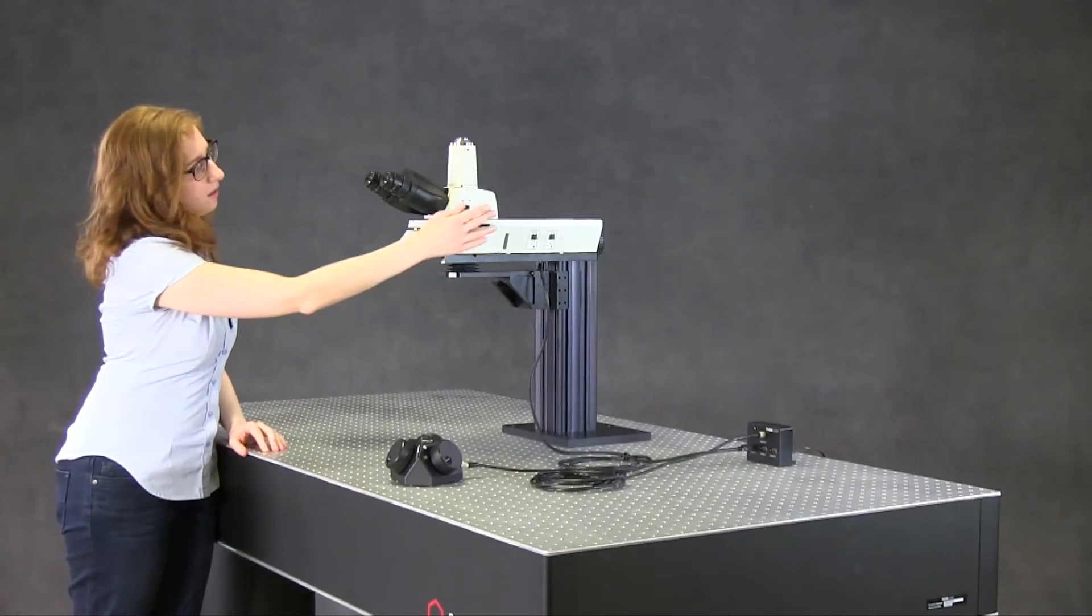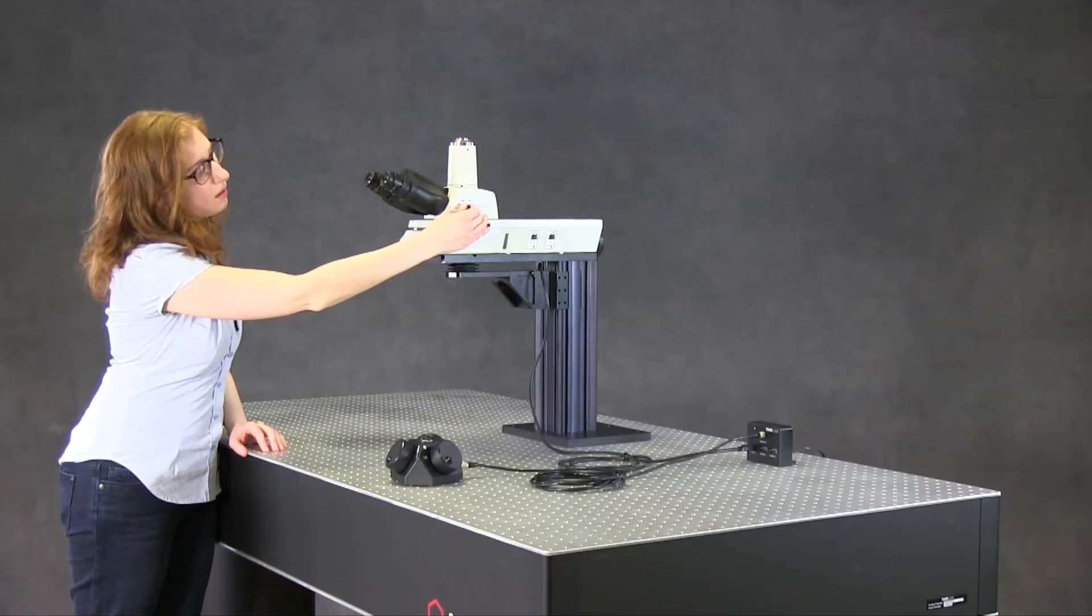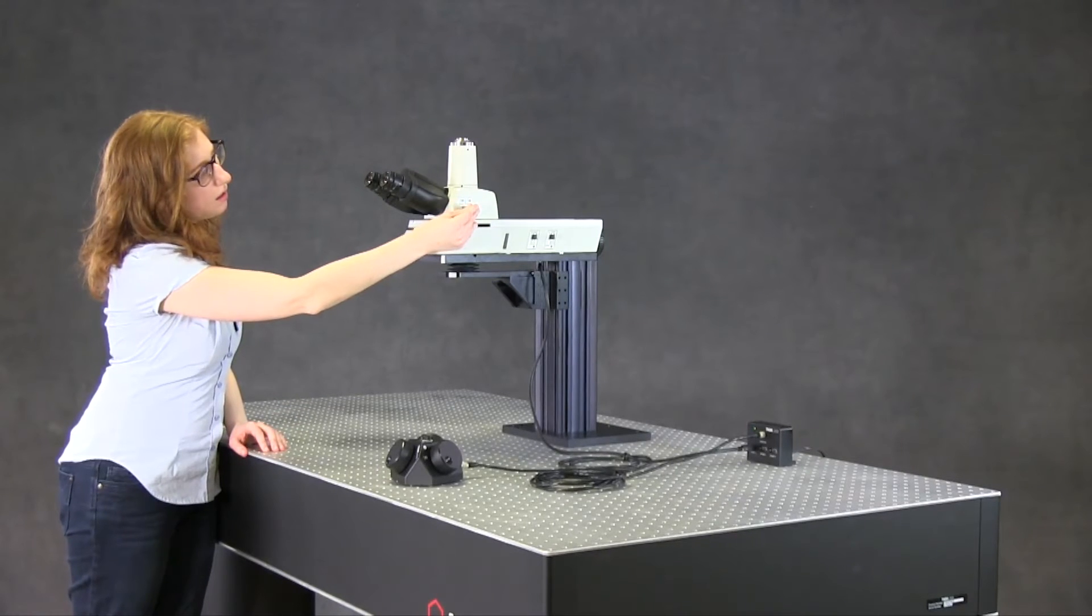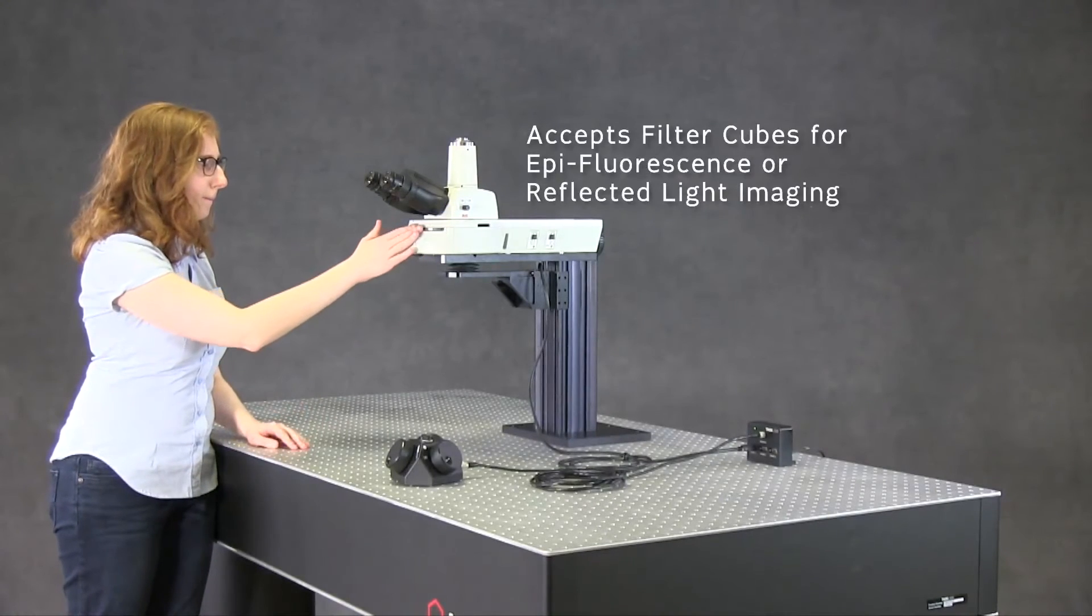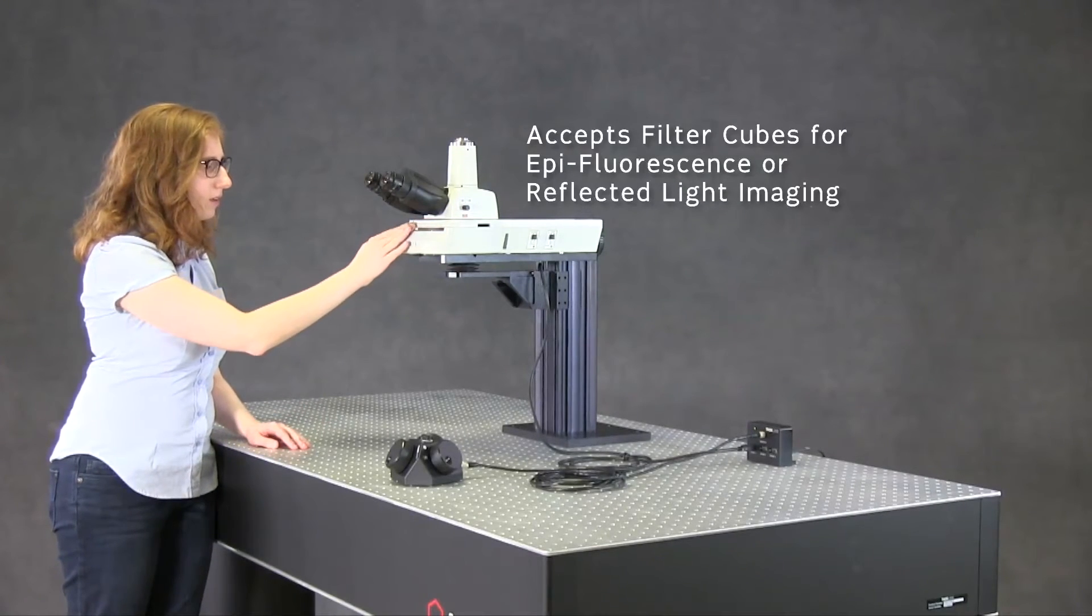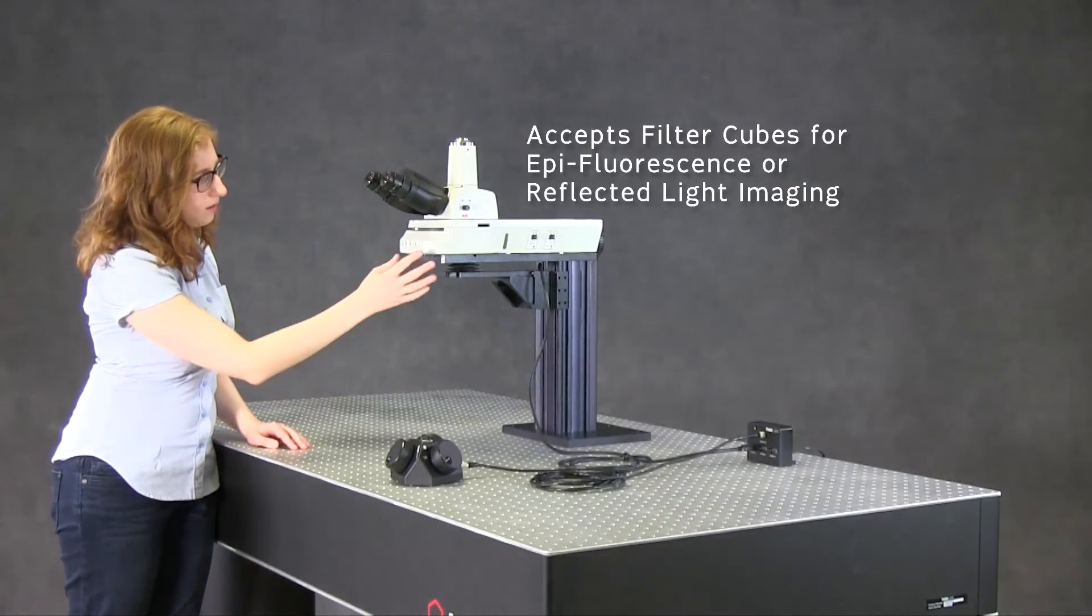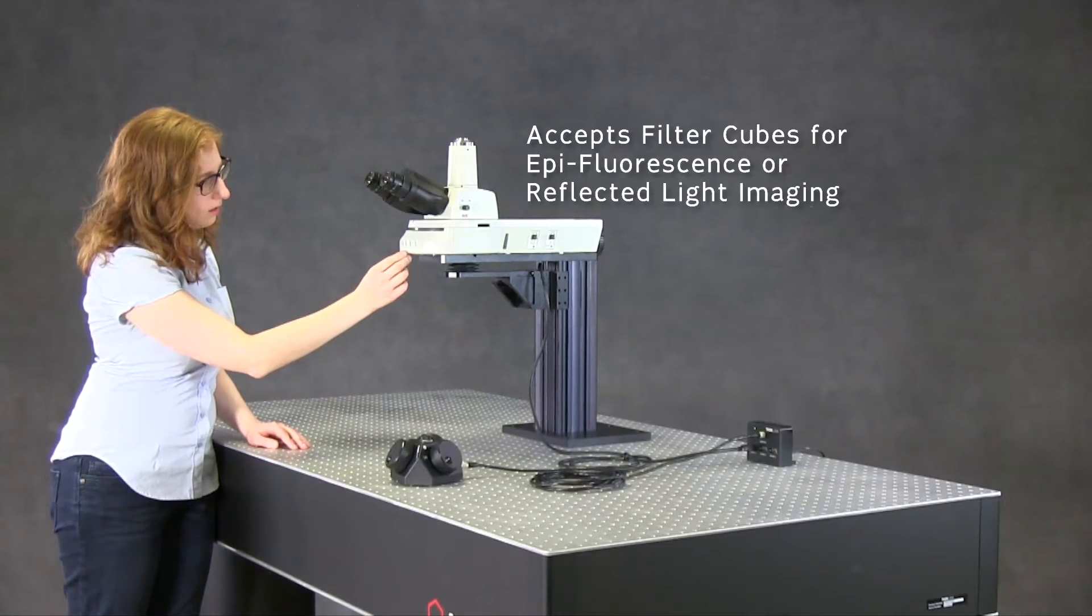A knob on the side directs the light to the camera or to the eyepieces. The epi-illuminator offers a turret for up to 6 filter cubes and an adjustable iris for tuning the illumination intensity.